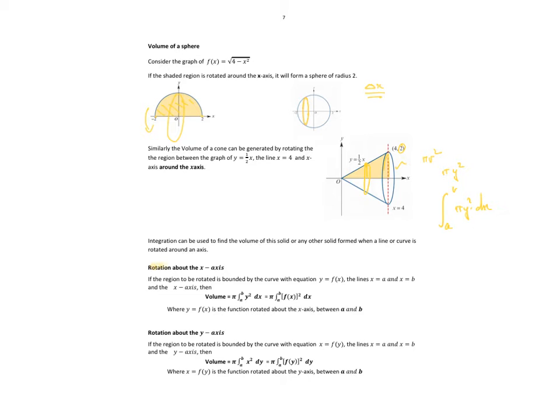So if we rotate about the x-axis, my volume is pi y squared dx as x changes. In the same thing, if we rotate about the y-axis, it's pi x squared dy. The key thing to note is if we rotate about the y-axis it's with respect to y. If we rotate about the x-axis, we integrate with respect to x.